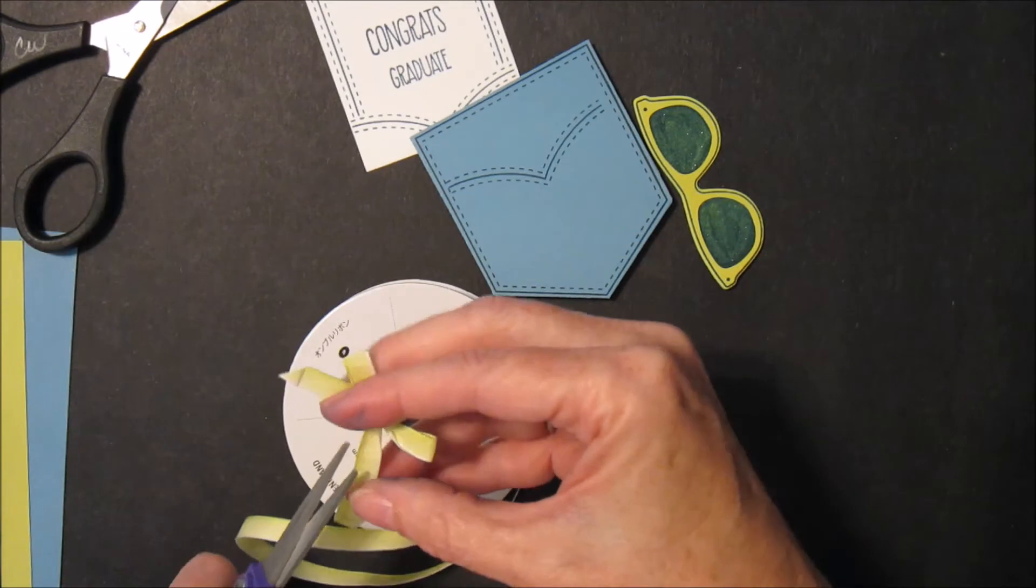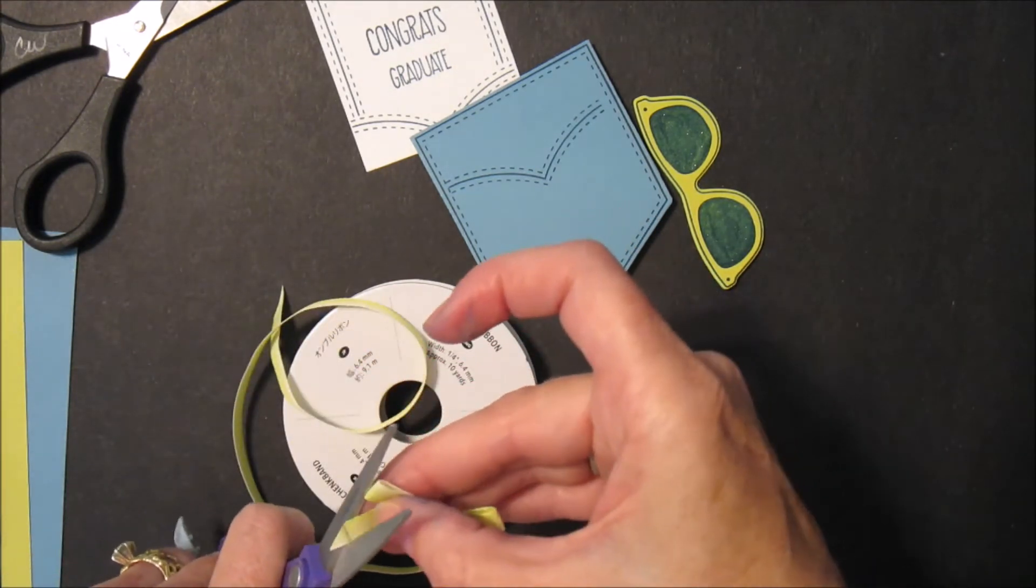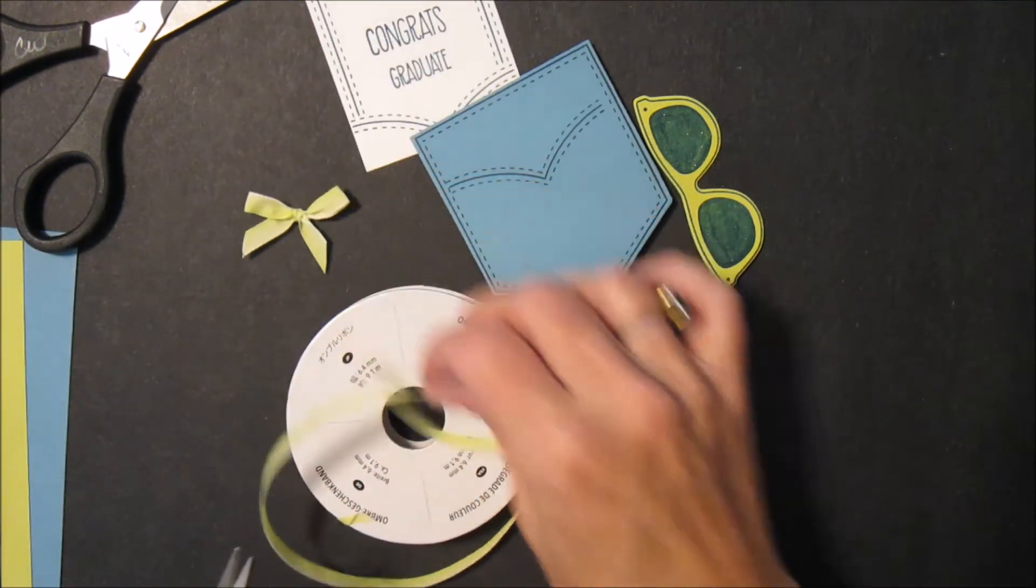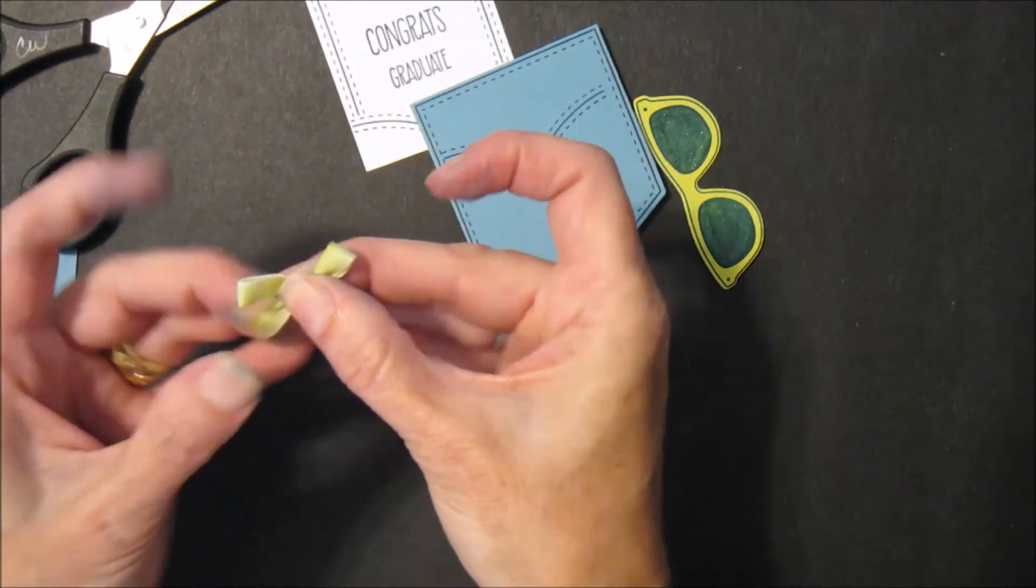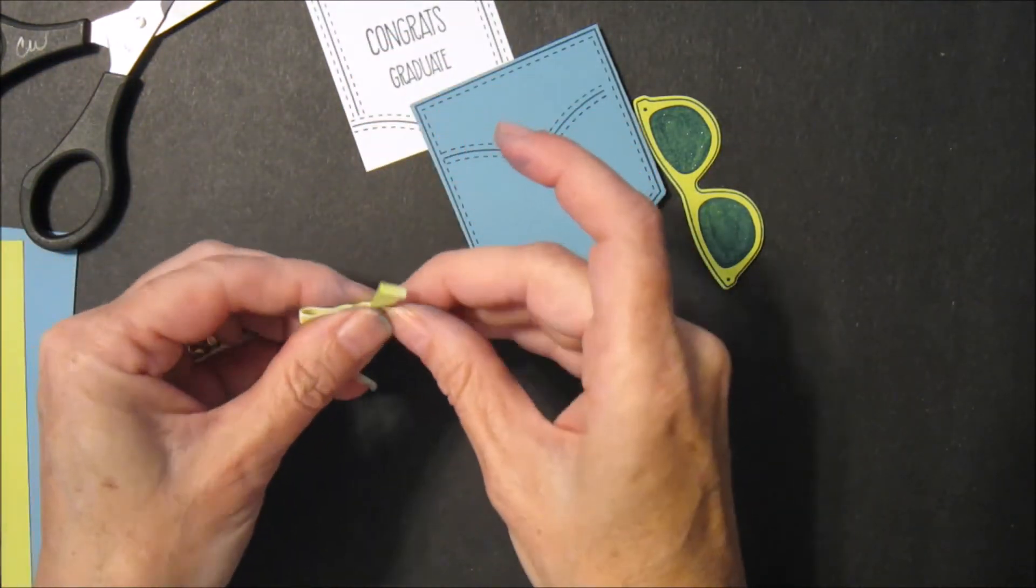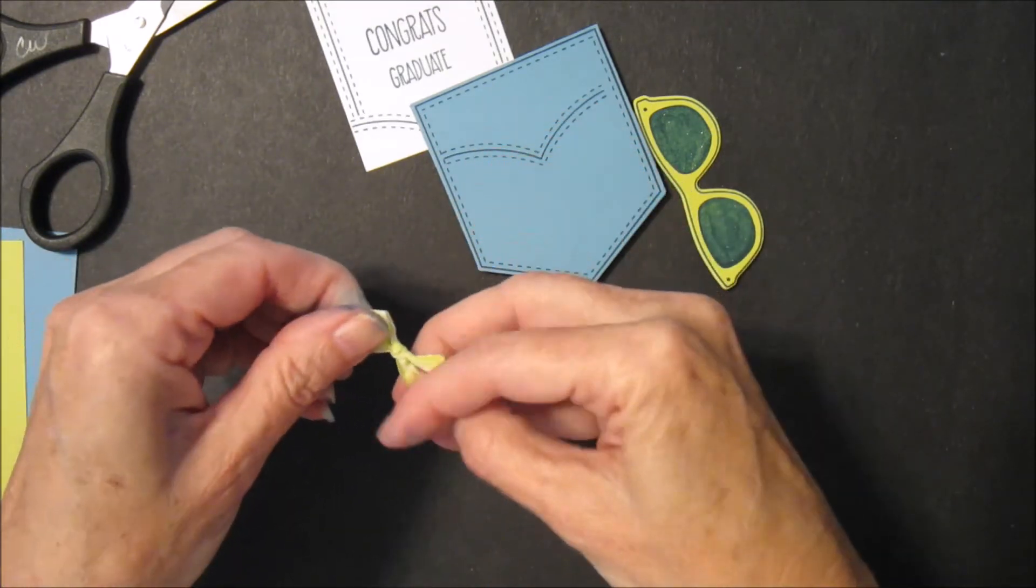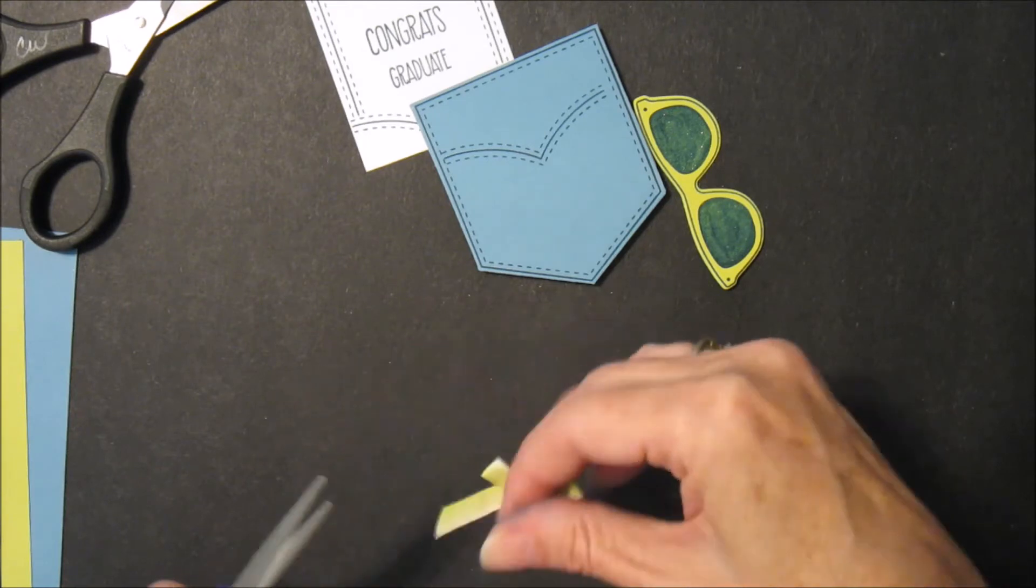Get my ribbon scissors, trim the tails. And there's my little bow. And it looks a little big, so let's adjust those. Because I want this to really be a small bow. So we'll get that even, adjust it down a little bit more.